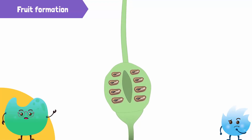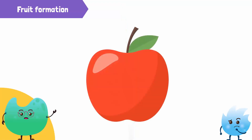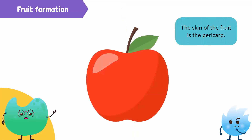The ovary grows bigger and ripens into a fruit. The skin of the fruit, or the pericarp, develops from the walls of the ovary. At this point, the flower completely becomes a fruit.